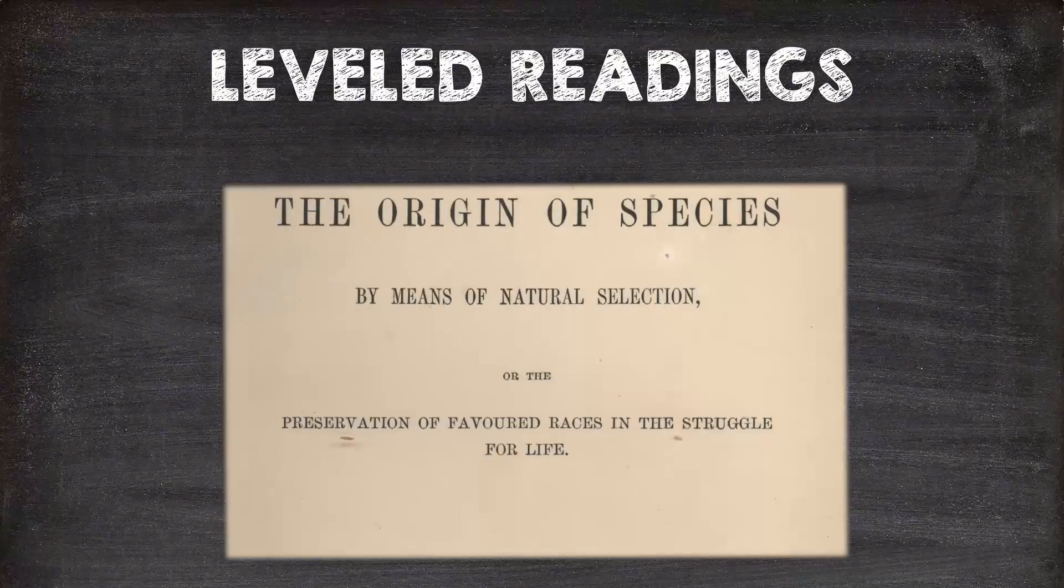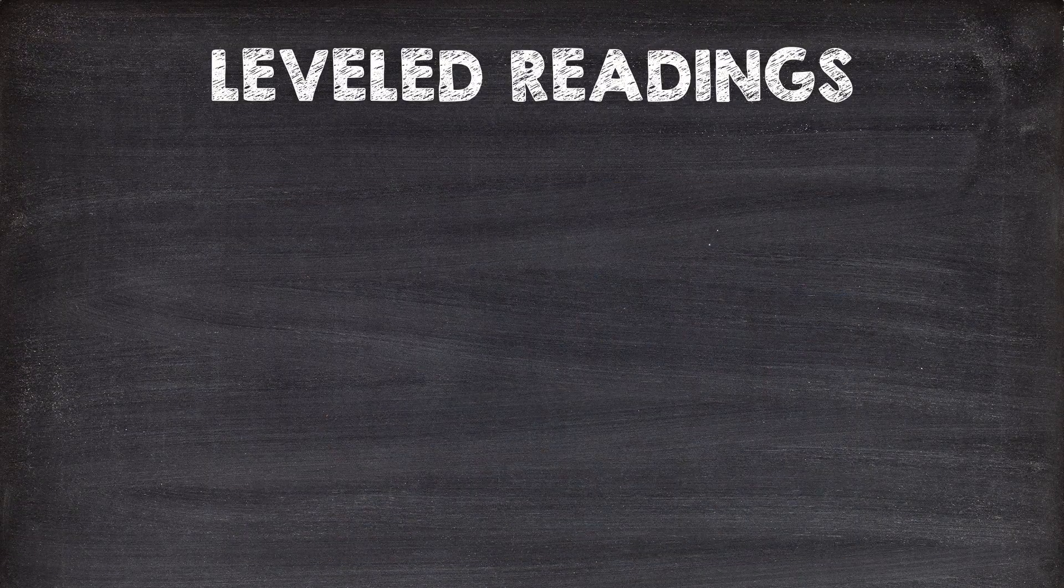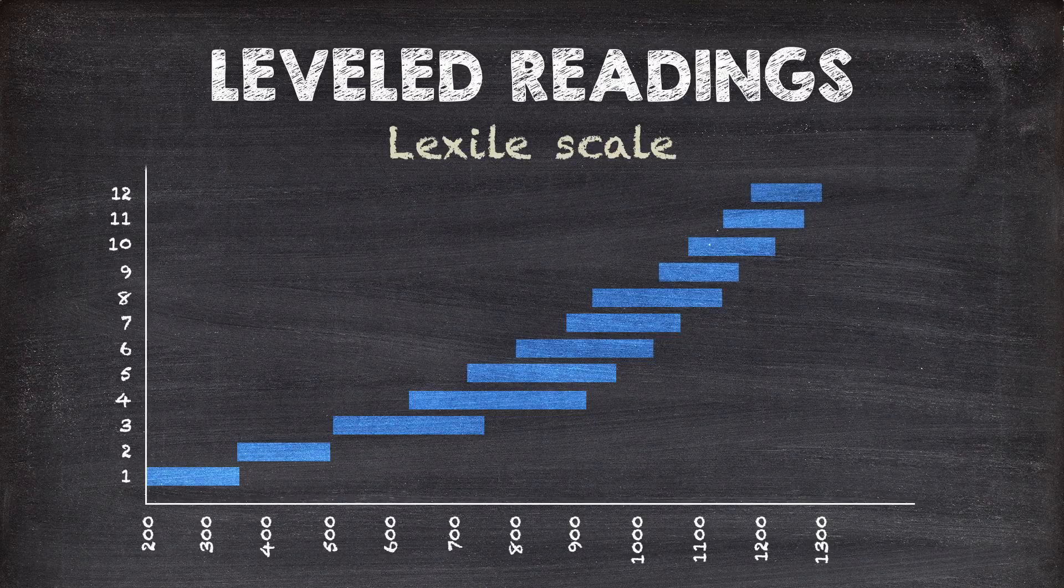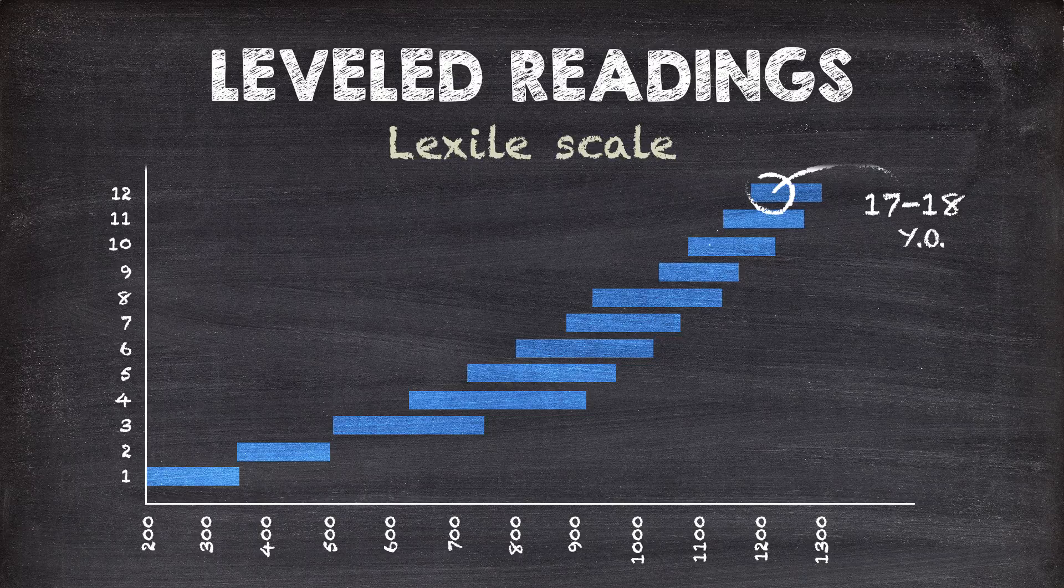Let's start with levelled readings. A lot of the readings and ideas in Big History are pretty hard. Some are really hard. We use a scale called Lexile to measure the complexity of each of our readings. For example, a measure of 900 is roughly something a 14-year-old should be able to read at the beginning of the year, while 1,200 is something we'd expect a 17 or 18-year-old to understand.